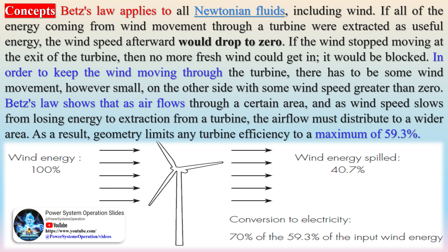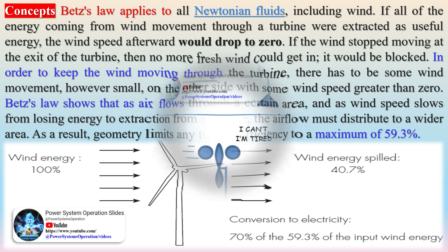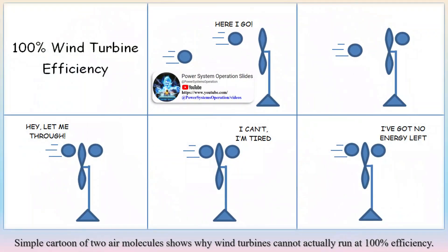For turbine placement, to maximize efficiency, turbines are placed in locations with consistent and strong winds. The spacing between turbines in a wind farm is also optimized to reduce interference and maximize energy capture.